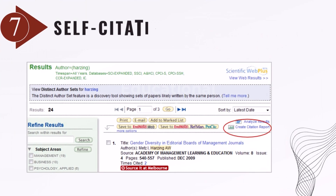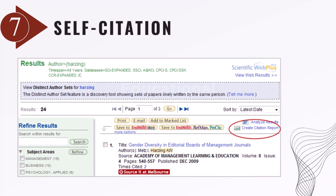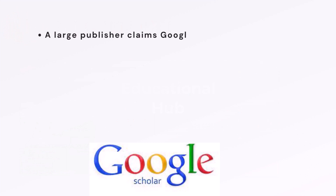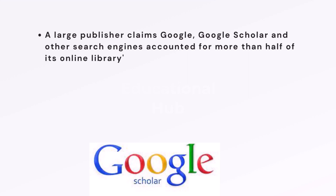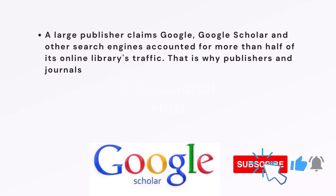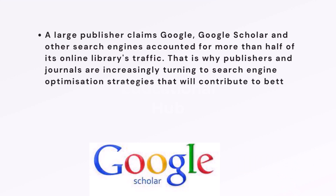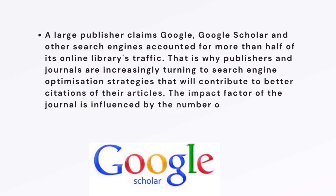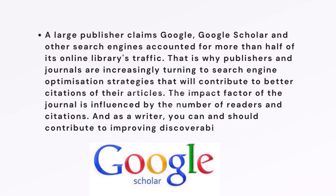Step 7: Self-citation. Indicate, as appropriate, the previous papers of your own or of your colleagues. This is important as search engines rank your current and future work on the basis of factors related to your previous work. A large publisher claims Google, Google Scholar, and other search engines accounted for more than half of its online library's traffic. That is why publishers and journals are increasingly turning to search engine optimization strategies to contribute to better citations. The impact factor of the journal is influenced by the number of readers and citations, and as a writer, you can and should contribute to improving discoverability at the article level.